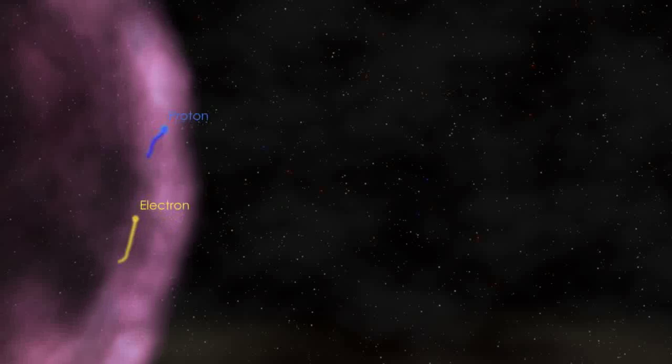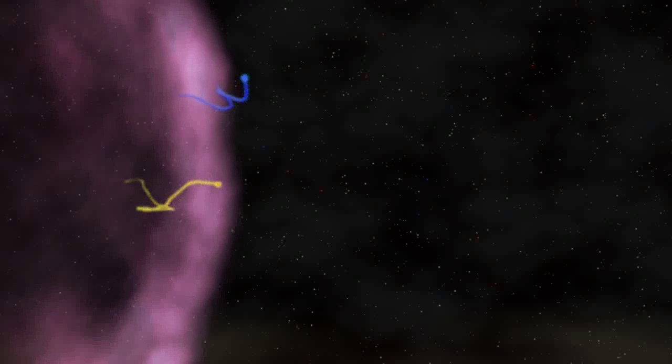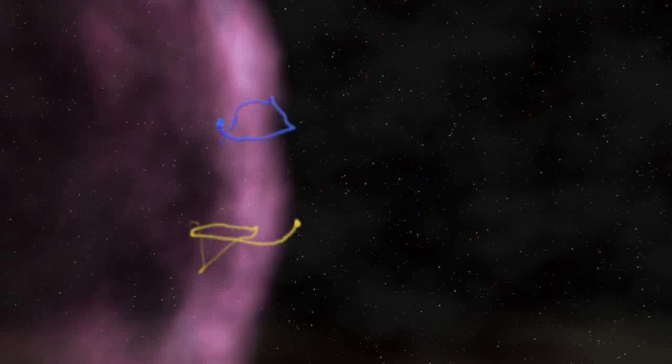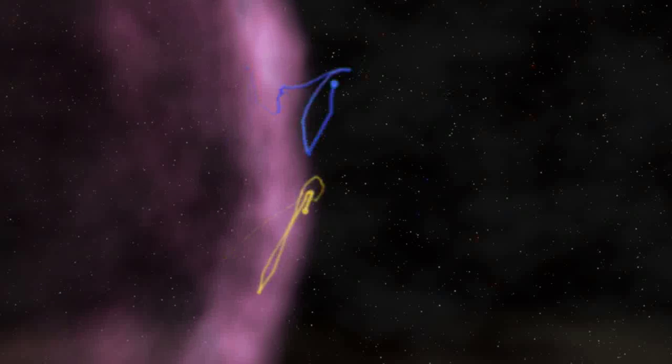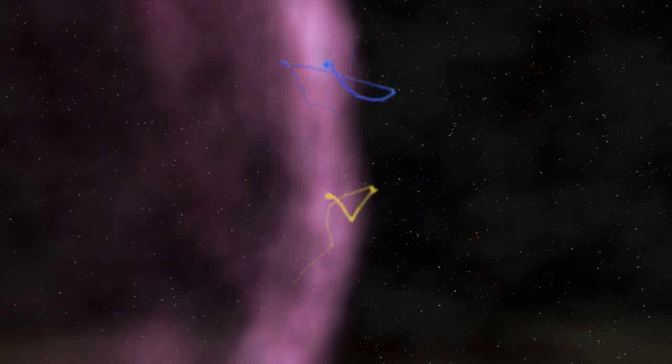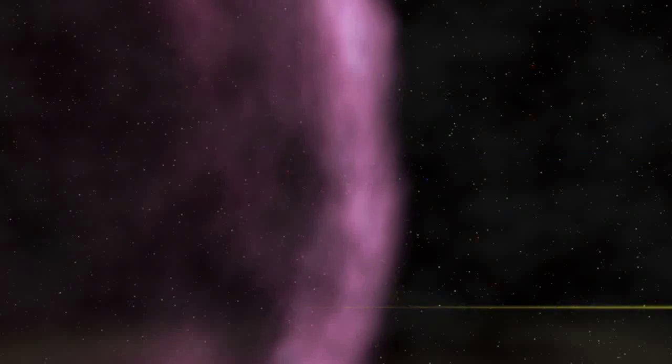Confined by a magnetic field, high-energy particles move around randomly. Sometimes, they cross the shock wave. With each round trip, they gain about 1% of their original energy. After dozens to hundreds of crossings, the particle is moving near the speed of light and is finally able to escape.